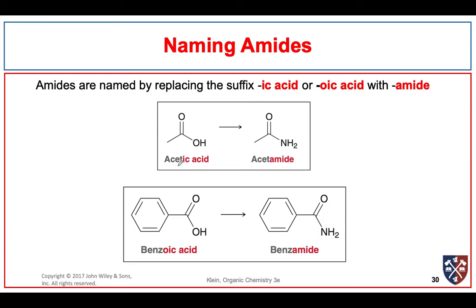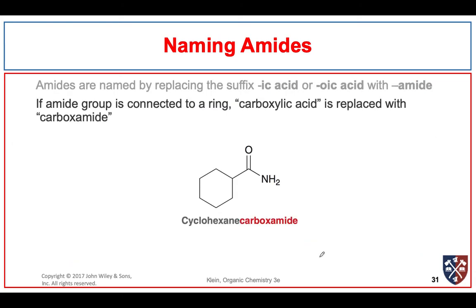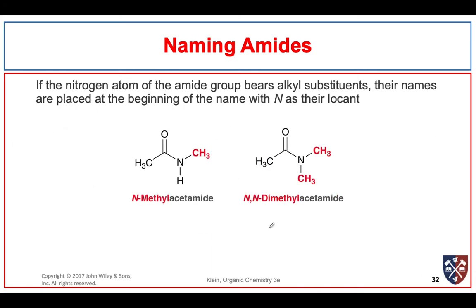Naming amides is a little different. We take our root from the acid and just add amide. So acetic acid becomes acetamide, and benzoic acid becomes benzamide. When the acid name uses the full carboxylic acid form, we take away 'ic acid' and add 'carboxamide' — for example, cyclohexane carboxamide. When we have substitution on the nitrogen, we use N as our locant. So we can have N-methylacetamide with one methyl on the nitrogen, or N,N-dimethylacetamide where we have two methyl groups on the nitrogen, replacing both hydrogens.